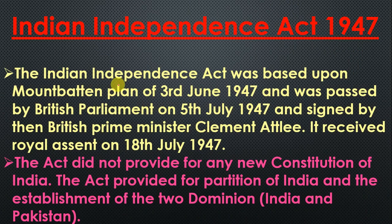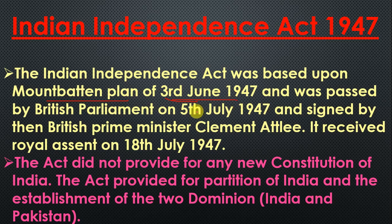The Indian Independence Act of 1947 was based upon the Mountbatten Plan of 3rd June 1947. The British Parliament passed this bill on 5th July 1947, and Britain's Prime Minister Clement Attlee signed it. So an important point here is: who was Britain's Prime Minister in 1947? He was Clement Attlee.